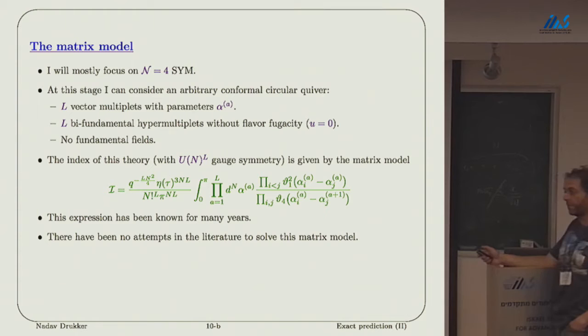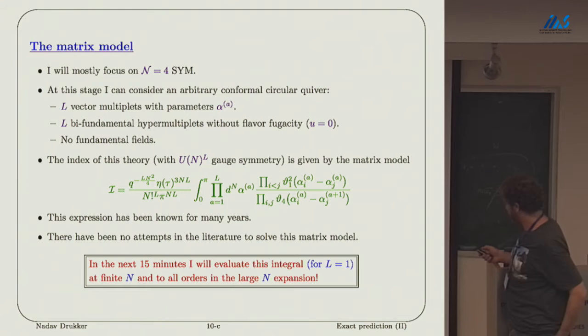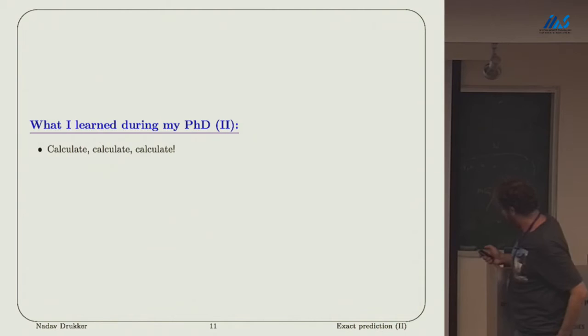This expression has been known for many years. In the original paper, not in the case of the Schur index, it was solved in the large N limit by Shiraz. But beyond that, I'm not aware of any attempts to treat it as a regular matrix model and solve it using matrix model techniques. Just treating it as a matrix model, I'm not aware that this was done. I will show you in the next 15 minutes how this can be done and solved completely, which is rather miraculous.